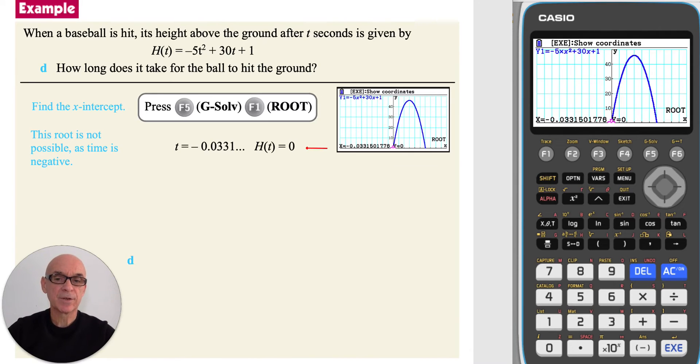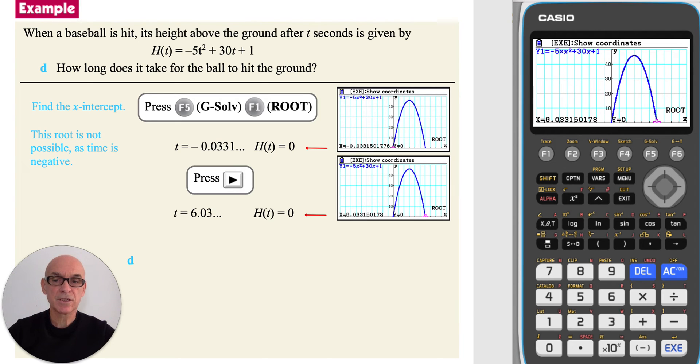As this value of time is negative, this root is not possible. Pressing the right cursor moves us to the second root. And again, it's good to add details to your sketch as part of your method. So the x-intercept has coordinates 6.03 comma 0.